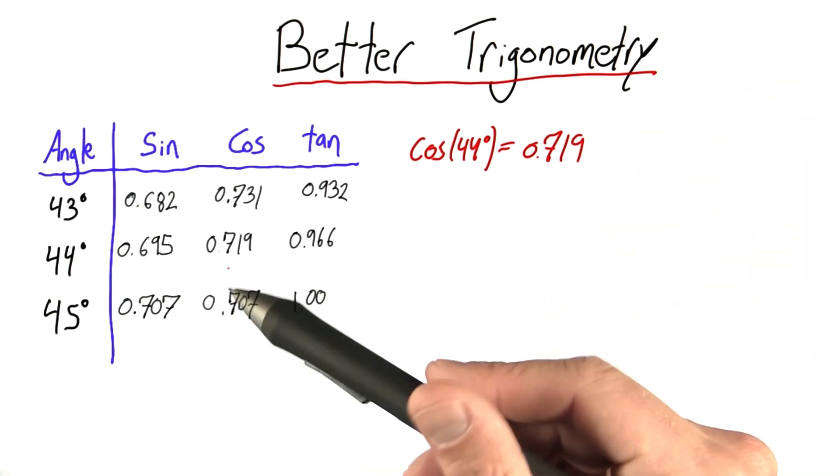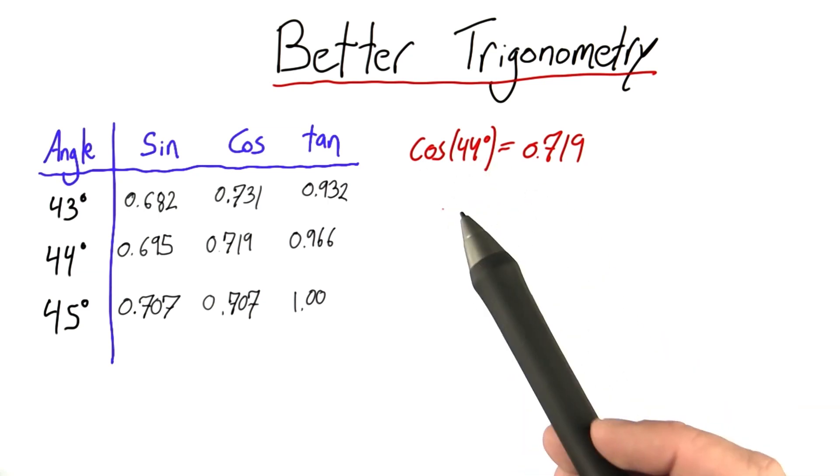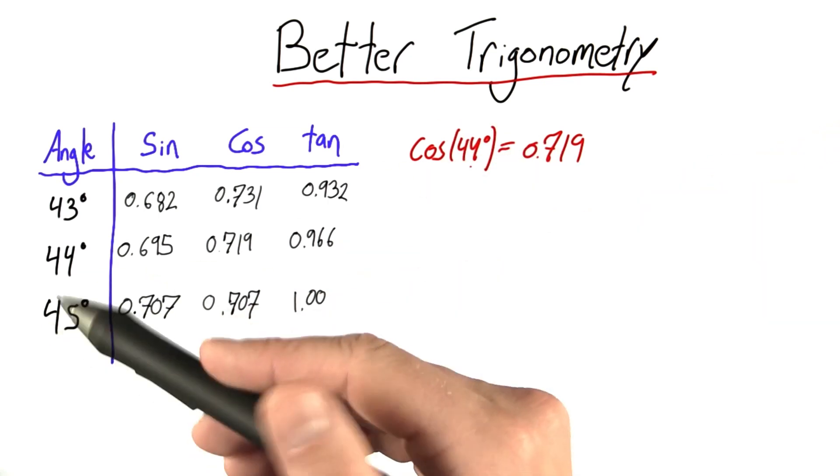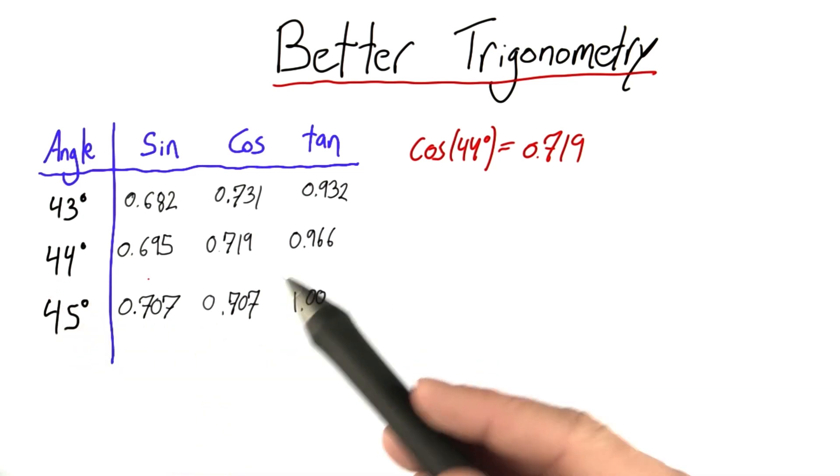That works. What if I wanted to know the cosine of 44.1279 degrees? Well, maybe I'd find a really good trig table, but it would be a pain to use, and we're living in the 21st century. Let's get computers to do this work for us.